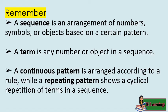Remember: a sequence is an arrangement of numbers, symbols, or objects based on a certain pattern. A term is any number or object in a sequence. A continuous pattern is arranged according to a rule, while a repeating pattern shows a cyclical repetition of terms in a sequence.